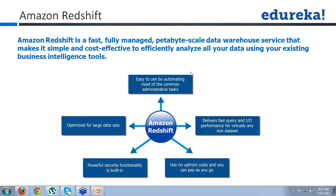In Teradata, one license is available for only 500 TB of data — not more than that. If your data size increases beyond 500 TB, you have to buy one more license, which is very expensive. But Amazon Redshift gives you petabyte-scale data — not just terabytes, even petabyte-scale. You can query that data very easily with very fast and spontaneous actions.